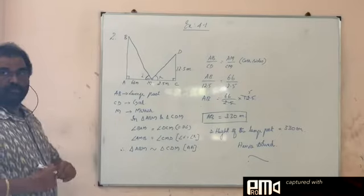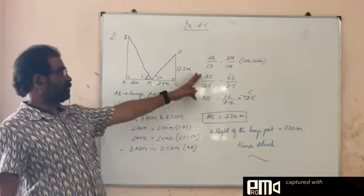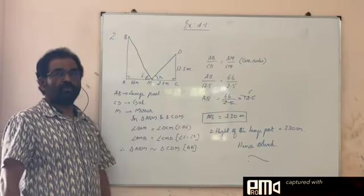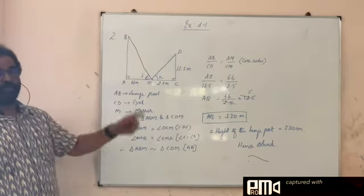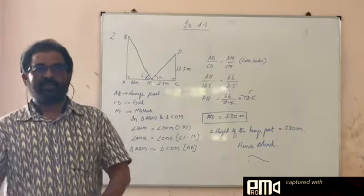Very simple, just we have to prove these two triangles are similar by AA similarity and the corresponding sides are proportional, so we will find the height of the lamppost. It is easy, practice it once, you will find it very easy. Thank you.